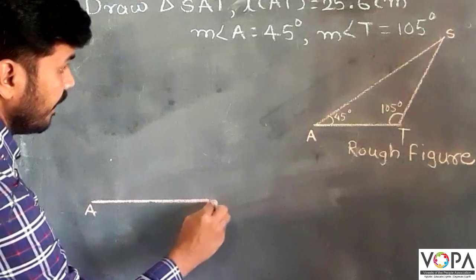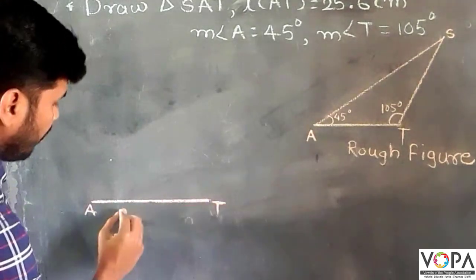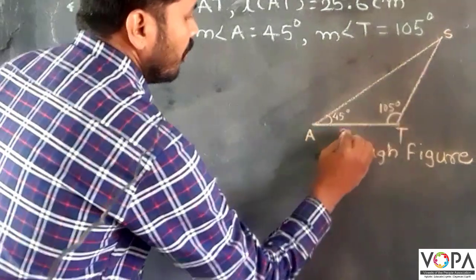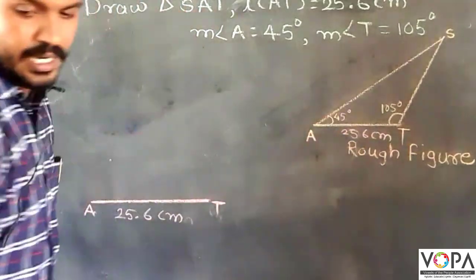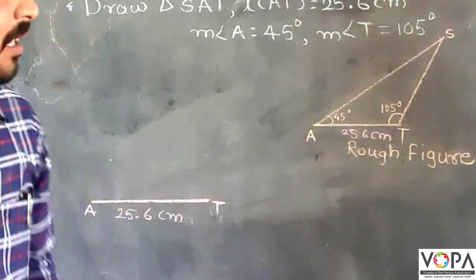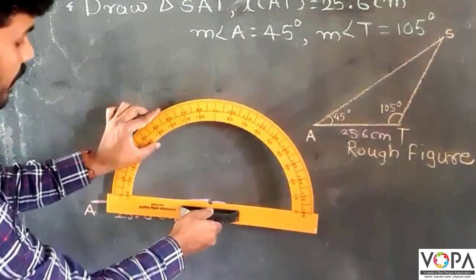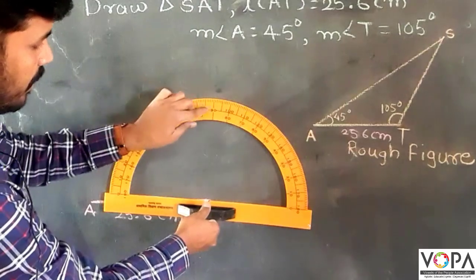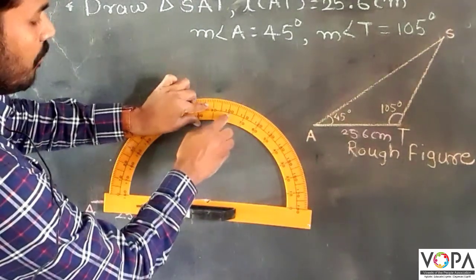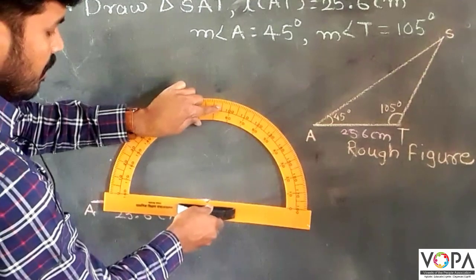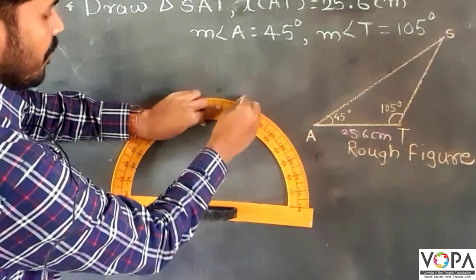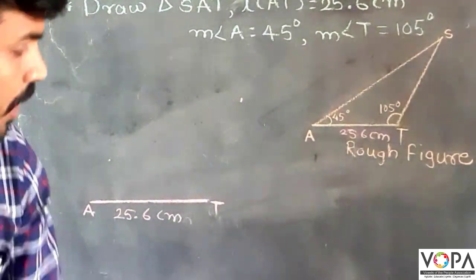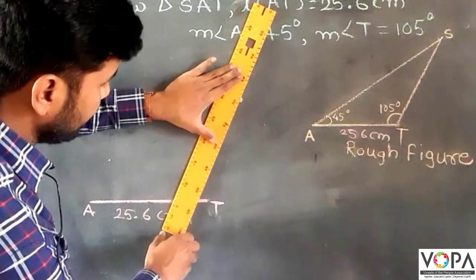Now take the protractor to draw angle T. Put the central point of the protractor on point T and measure 105 degrees. Here is 100, and here is 5. Join this point with the help of the ruler to vertex T and draw extended lines for the triangle.